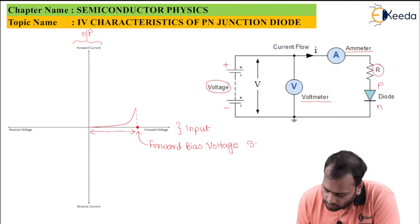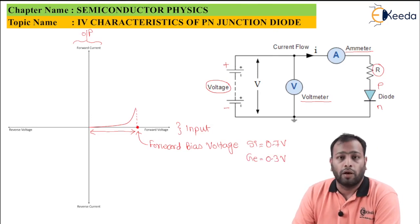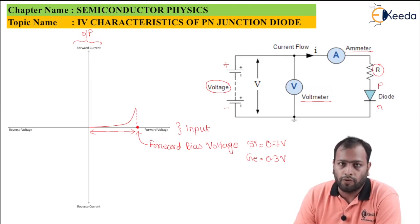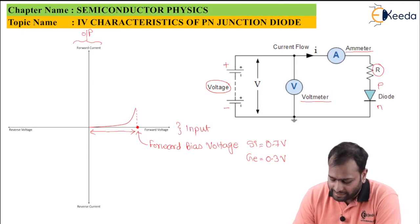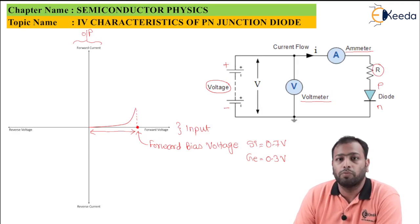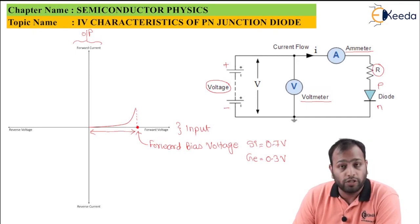For silicon, the forward bias voltage is 0.7 volts, and for germanium it is 0.3 volts. Although germanium has a lower forward bias voltage and will start conducting for a smaller voltage, silicon requires approximately double that voltage to begin conduction.